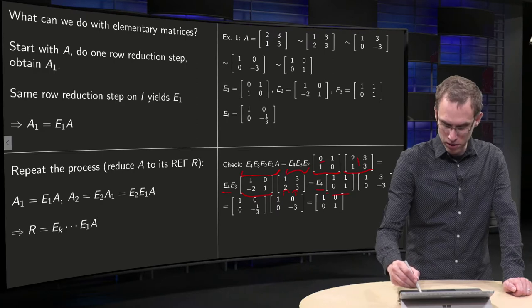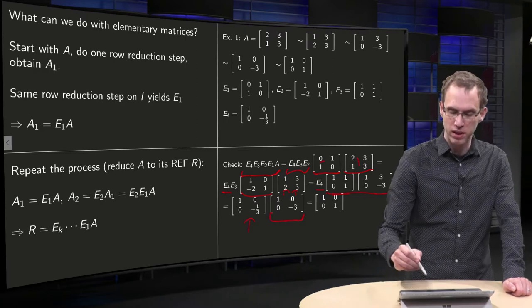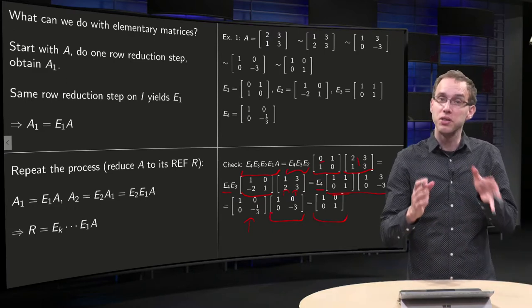And finally compute this product and write down what E4 is. Over here we have the product times E4. We indeed obtain the identity matrix. So you see, indeed,